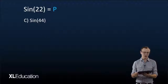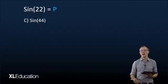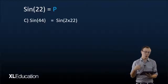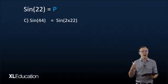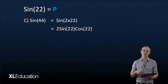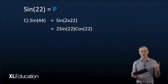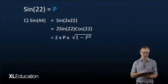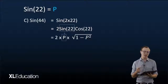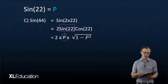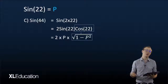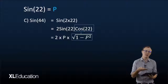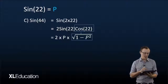For sine of 44°, this is a double angle formula question because 44 is 2 times 22. We split it using our double angle formula, and it becomes 2·sin(22°)·cos(22°). We already know sin(22°) equals P and cos(22°) equals √(1 − P²), so we substitute in for those two functions.